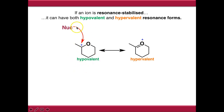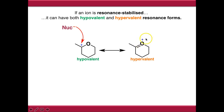We cannot push a pair of electrons onto this oxygen, even though it's tempting because it has a positive charge on it. It's hypervalent - it's already making too many bonds, so we can't push electrons onto that positive charge.